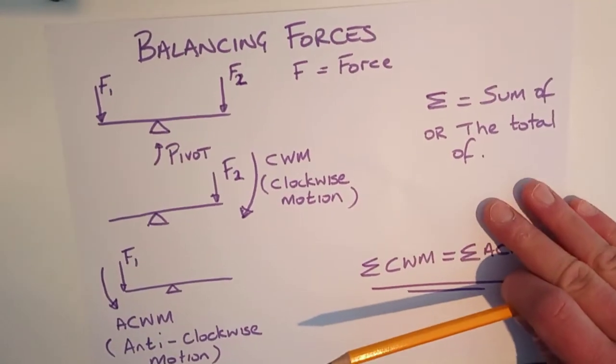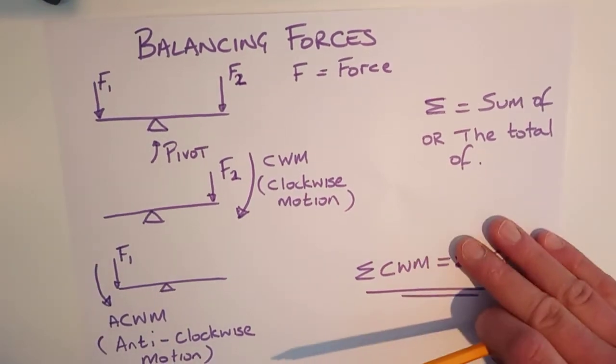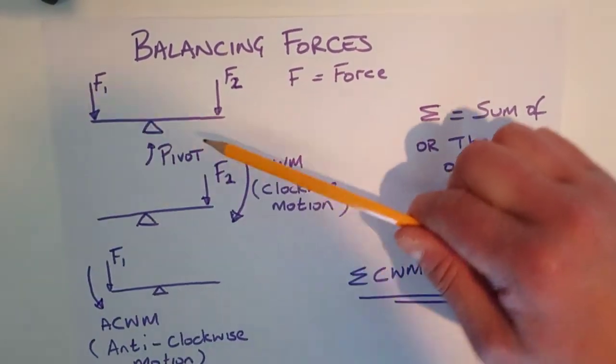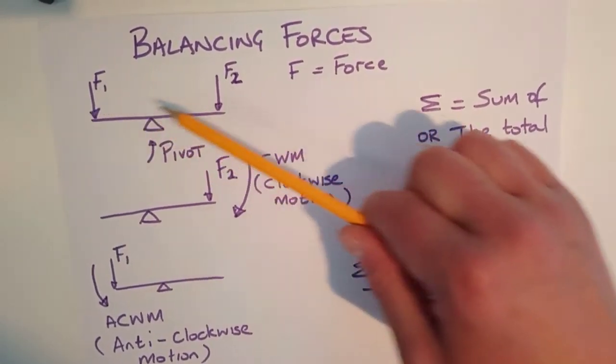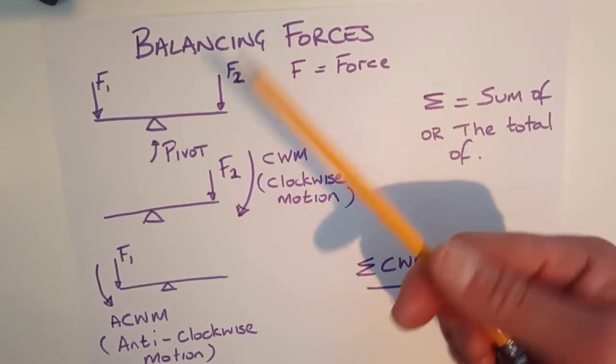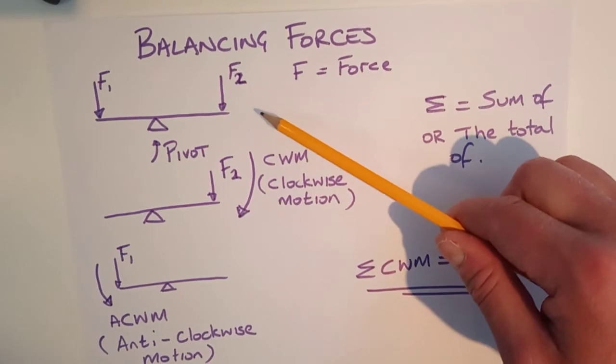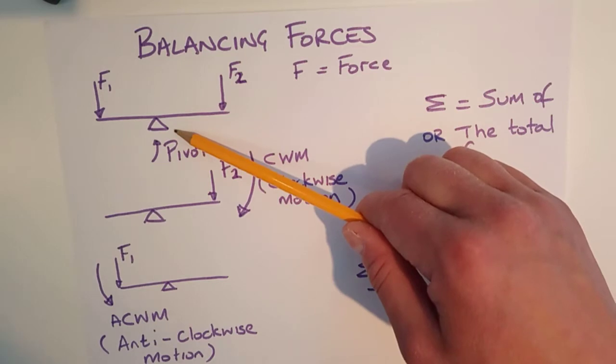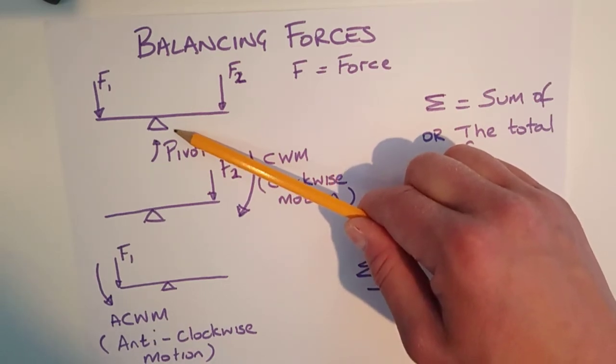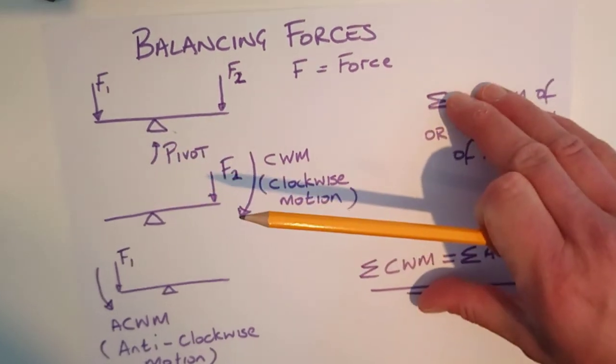Now you can see here when we're talking about balancing forces, we're looking at, in principle, a simple example of a seesaw. So you've got two forces on each end of the seesaw, so it could be two people, and both exert a force down. And a bit in the middle here, the triangle is called the pivot.